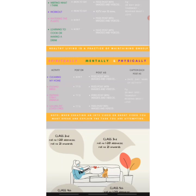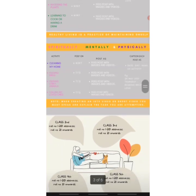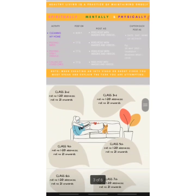Next is 'Learning to Cook or Making a Drink' — it can be fireless cooking or cooking with fire, but when using fire make sure your parents are with you. Do not attempt any fire activity without your parents. You can make a drink or a salad. Fireless cooking has lots of options. You have to make a short video and an image of the same.